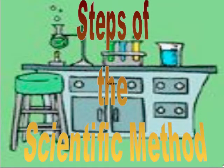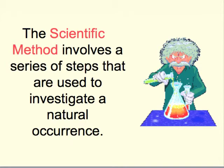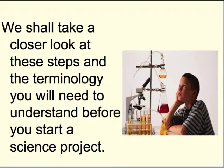The scientific method is a way to ask and answer scientific questions by making observations and doing experiments. It is a method or procedure that has characterized natural science since the 17th century. It is an ongoing process which usually begins with observations about the natural world. We will take a closer look at the steps and terminology you will need to understand before you start a science project.